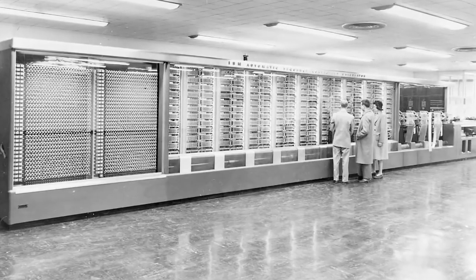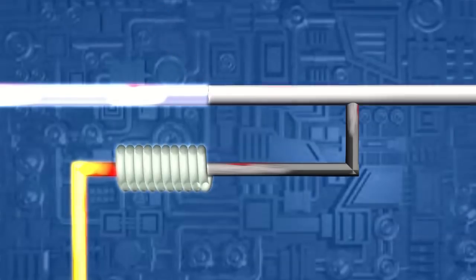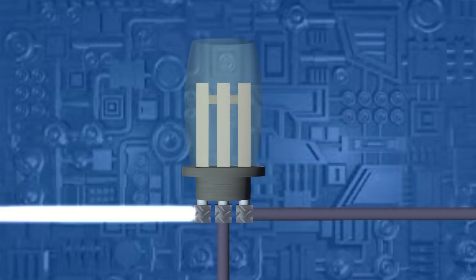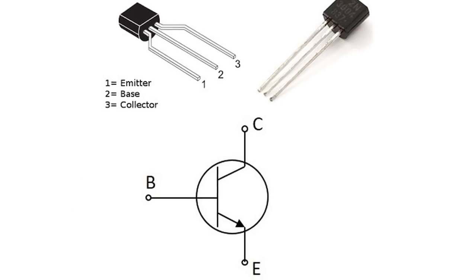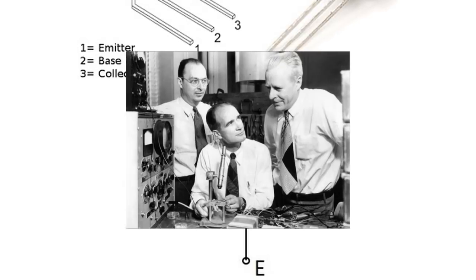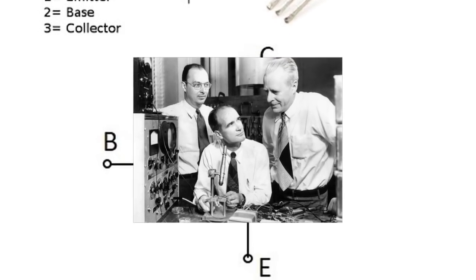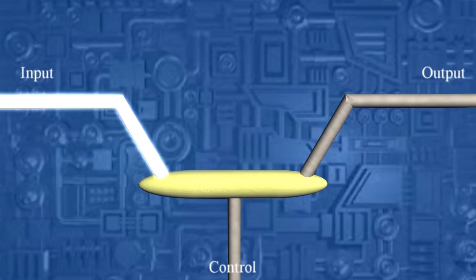The relay was improved upon by the triode vacuum tube, which could switch on and off thousands of times per second. The vacuum tube was improved upon in 1957 by the invention of the transistor by John Bardeen, Walter Brattain, and William Shockley.